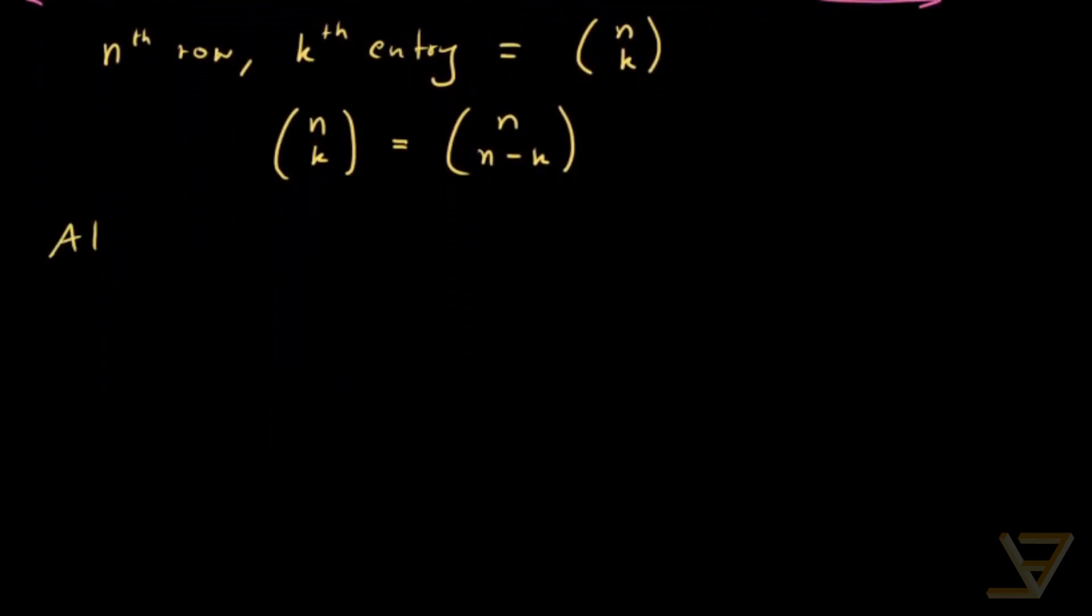In terms of algebra, it's quite easy to prove. It doesn't take much because we know what the binomial coefficients are in terms of factorials. So we have n choose k is equal to n factorial divided by k factorial divided by n minus k factorial.